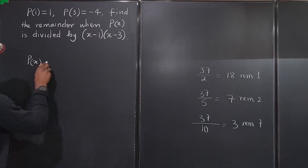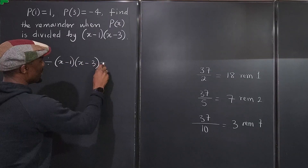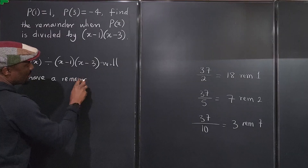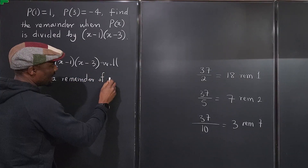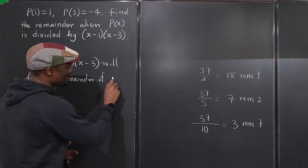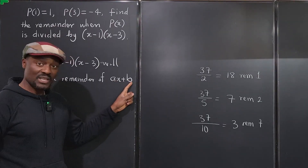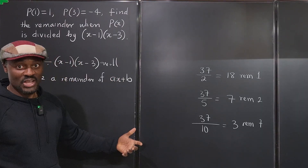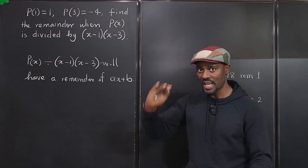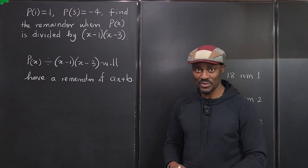P(x) divided by (x-1)(x-3) will have a remainder of either a constant or, more generally, ax + b. If a is zero it's a constant; if a is not zero it's a linear function. We just don't know what a or b will be, but this is what the remainder is going to look like — one degree less than the quadratic divisor.